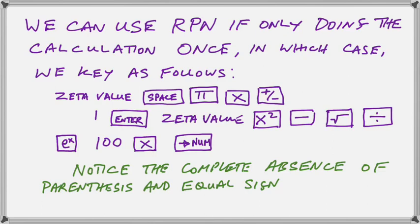And we have the 1 and the zeta value. We square it, and then we do the subtraction. And then we do the square root of the total.